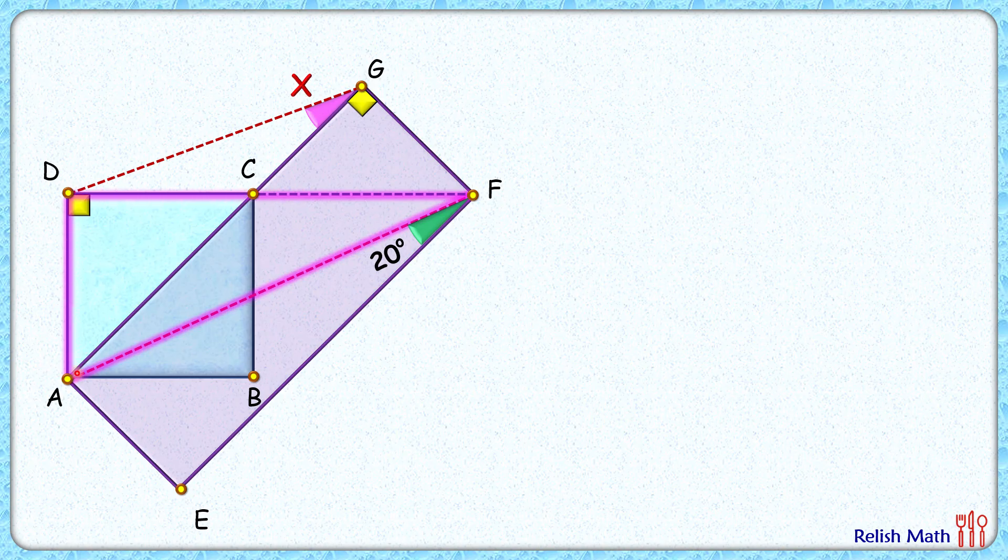By theorem, if a line segment is subtending the same angle at different points, then those points and the endpoints of the line segment are cyclic. So we can draw a circle passing through points G, F, A, and D.